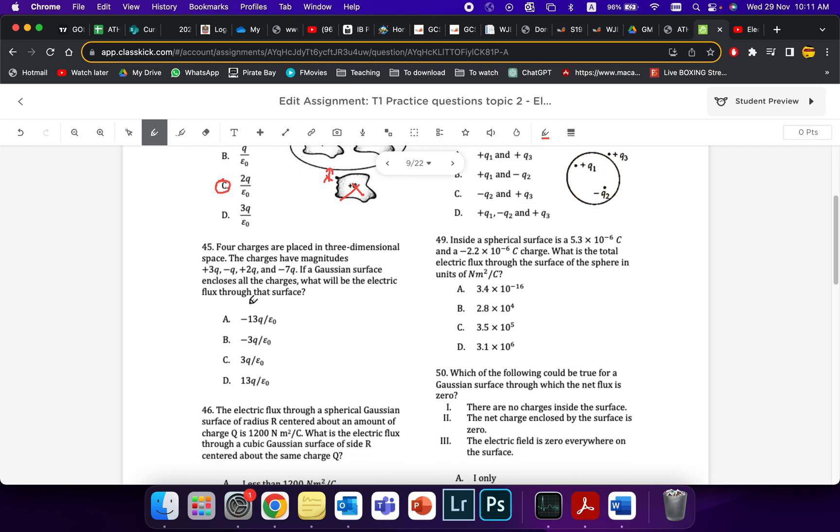Four charges are placed in space, they have these magnitudes. If a Gaussian surface encloses all of the charges, what will be the flux to the surface? So if I just take a surface and I have 1, 2, 3, 4 charges. Plus 3, I'll write it out now, plus 3 minus Q, which is minus 1, plus 2, minus 7, equals negative 3. My overall flux, adding the enclosed Q's together, will be minus 3 over epsilon. There we go.